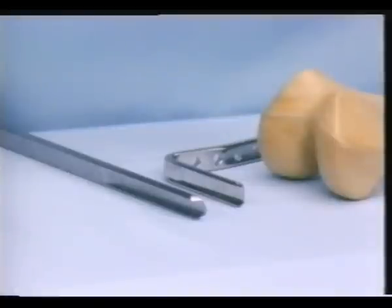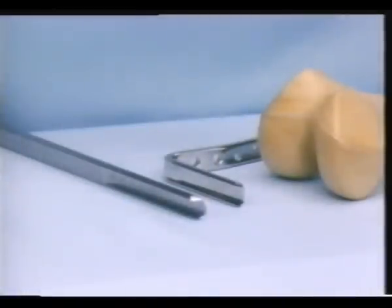The most important instrument for the introduction of the condylar plate is the seating chisel. Its U profile corresponds exactly to the blade of the plate. Its opening points towards the joint.